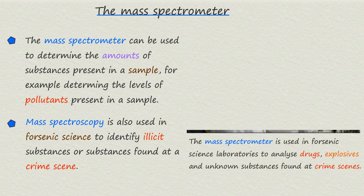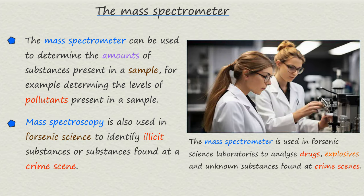The mass spectrometer is also commonly used in forensic science to aid in identifying illicit drugs, detecting explosives and determining the composition of unknown substances found at the scene of a crime.